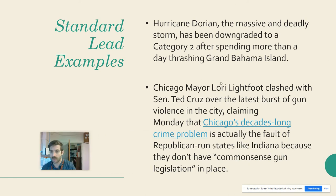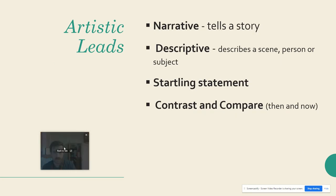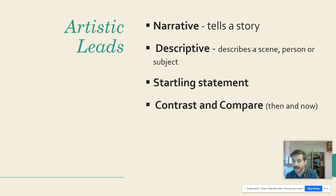Here's another example: 'Chicago Mayor Lori Lightfoot clashed with Ted Cruz over the latest burst of gun violence in the city, claiming that Chicago's decade-long crime problem was actually the fault of Republican-run states like Indiana because they don't have common sense gun legislation in place.' This is a news article that's just saying here's the argument, here's what's happening between these two politicians — who, what, when, where, why. That works really well for news stories.